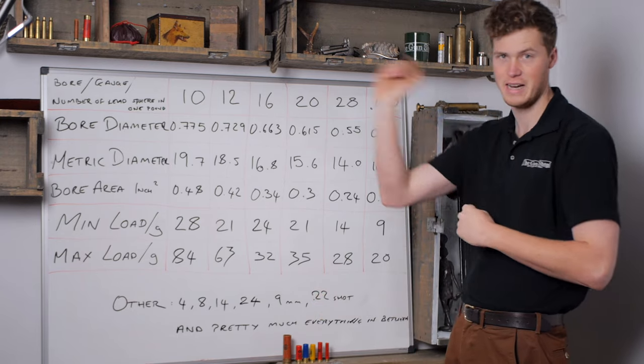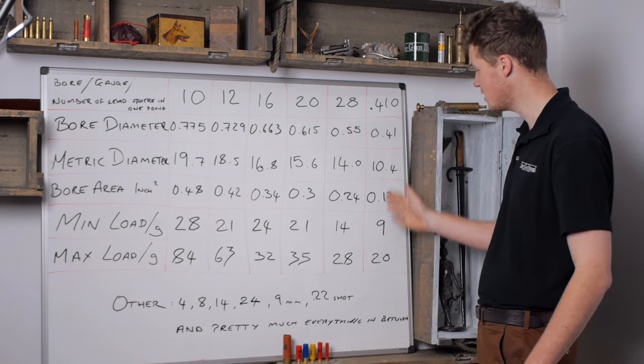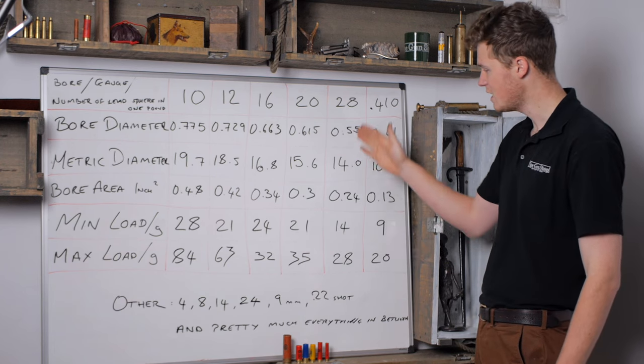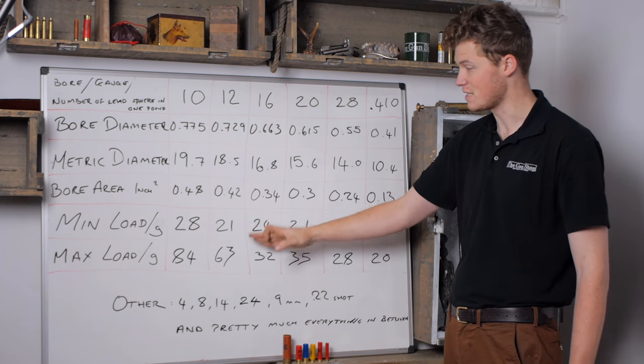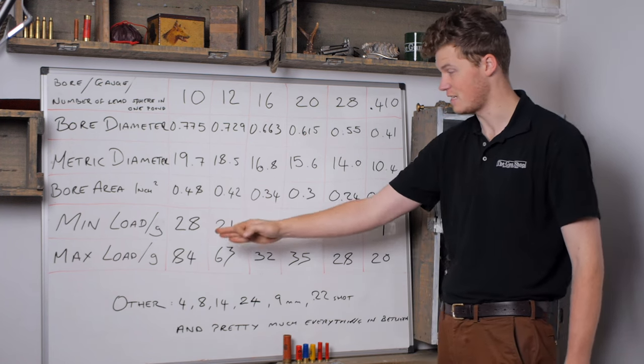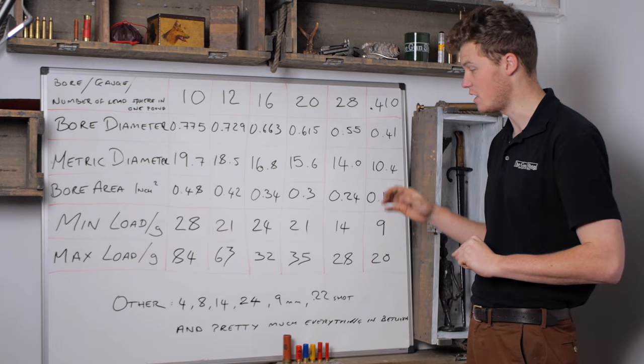Load variance: the .410 goes from 9 to 20. The 28, 14 to 28. The 20, 21 to 35. The 16, 24 to 32. The 12, 21 to 63. And the 10, 28 to 84. These are all commonly available factory loads. If you home load, you can obviously take it down lower or you can push it up higher if you require.